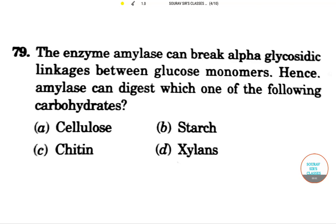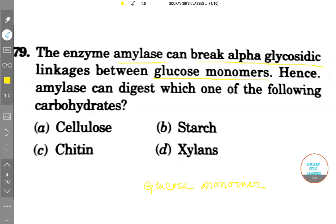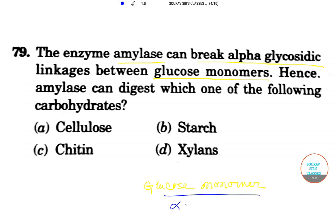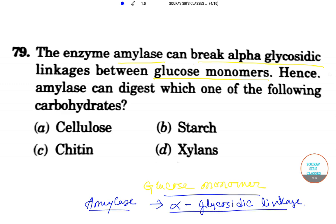Hello students, welcome to Show Officer Classes. This question is about amylase enzyme. Amylase can break alpha glycosidic linkage between glucose monomers. There are glucose monomers and in between these glucose monomers there is an alpha glycosidic linkage, and this linkage is broken by the enzyme amylase.